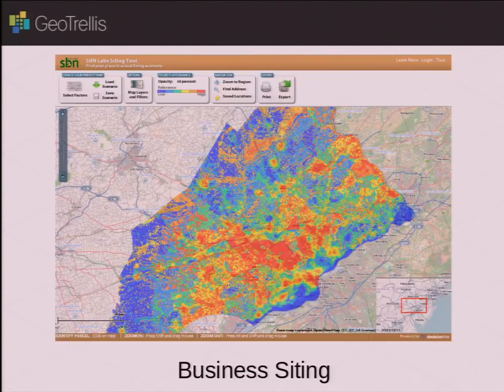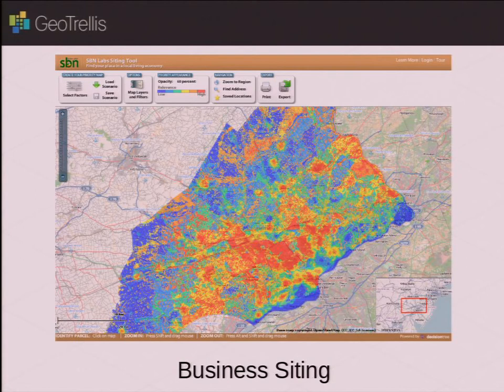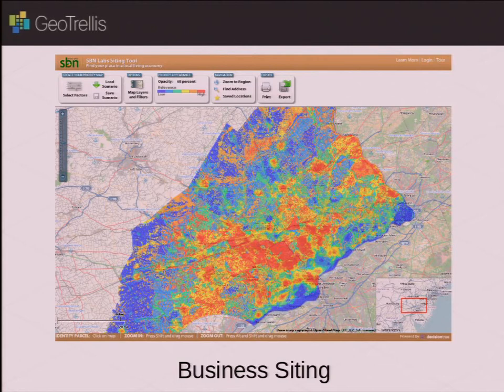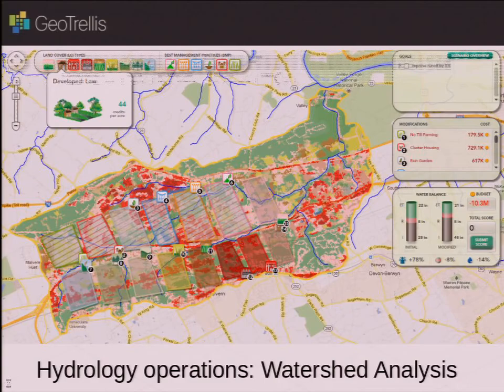So some examples of use cases of GeoTrellis, business siting. This is a weighted overlay of different properties, different properties that locations can have, and then you weight the properties according to what would be good for a business site. And then you can see visually on a map where the hotspots are and where we should put our businesses.